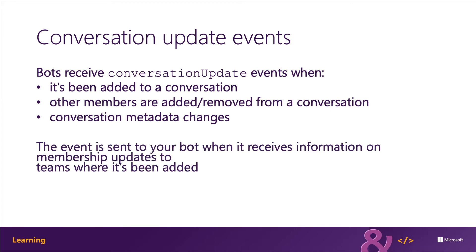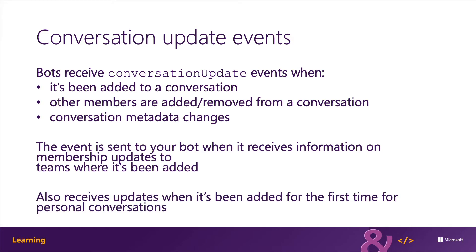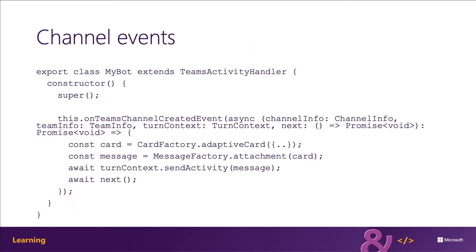The conversation update event is sent to your bot when it receives information on membership updates for teams where it's been added. It also receives an update when it has been added for the first time, specifically for personal conversations. Microsoft Teams will notify your bot of many different events. For example, the channel created event is sent to your bot whenever a new channel is created on a team your bot is installed in.